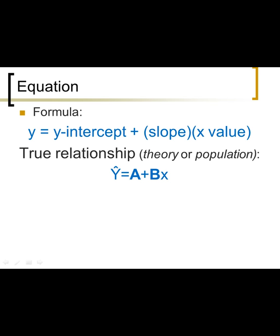There's a true relationship between population variables — for example, between number of police per capita and crime per capita across all cities in a population. The line gives predicted y values, written ŷ (y-hat), because the line won't be exactly on the dots — it'll be near them. So y-hat values are predicted, not real y values. We use real x values, multiply by slope b, add intercept a, and get a predicted y value.